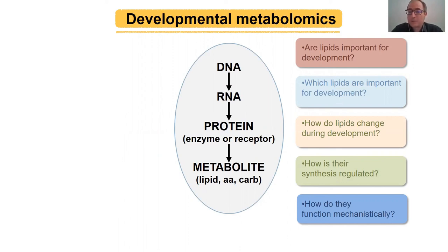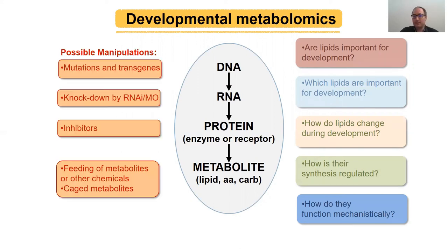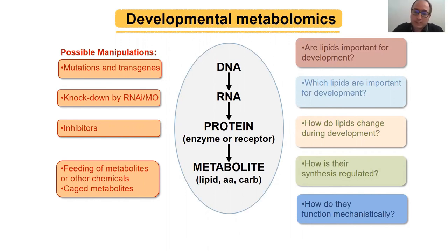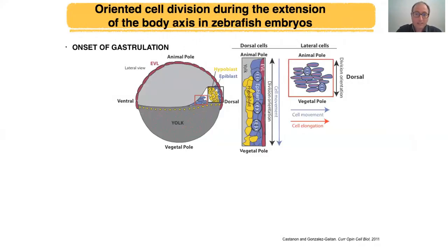We want to identify which lipids are important, how they're produced, how they change during development, and how their synthesis is regulated. Often the hardest question is how they function mechanistically in development. You can get at this because you can manipulate the system at all these levels — using mutations or transgenes on the DNA level, knockdowns by RNAi, and today I'm going to show morpholino knockdowns in zebrafish. You can also use inhibitors for proteins, or manipulate the system directly at the metabolite level using cage metabolites to control spatiotemporally when a specific metabolite is in action.